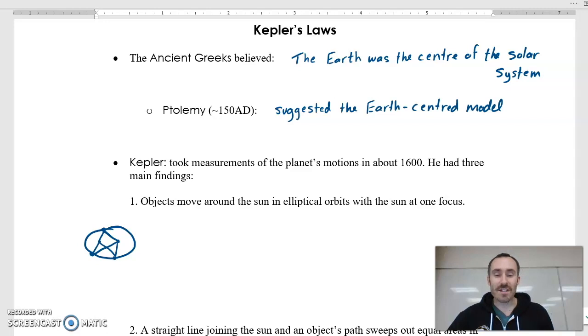So he said that objects move around the sun in elliptical orbits with the sun at one focus. Here's one of the foci. We're going to say this is the sun. And so objects would move around the sun in elliptical orbits. Now this is very, very exaggerated. The elliptical orbit that the earth takes around the sun, for instance, is almost circular. It's very, very close. It is technically elliptical, but we can almost consider it to be a circular orbit. Now a circle is a type of ellipse. It's just that with a circle, both foci are in the same spot. It's still an ellipse. It's just a special kind of ellipse, just like a square is a special kind of rectangle.